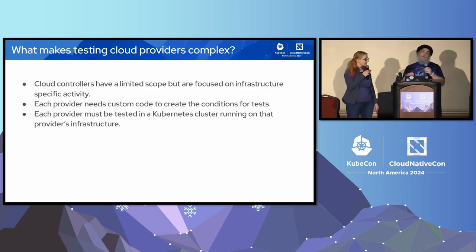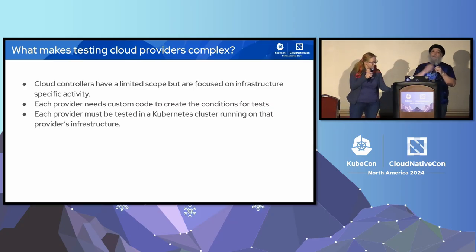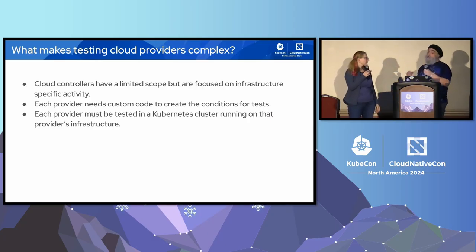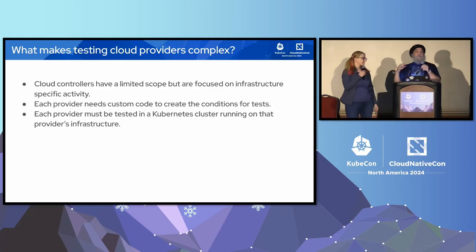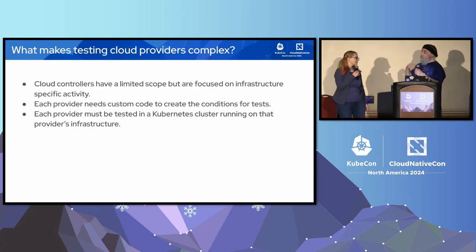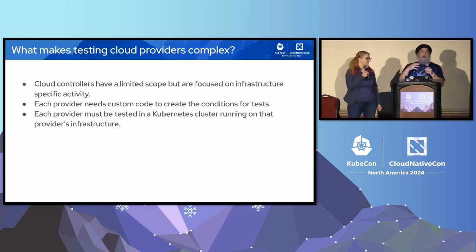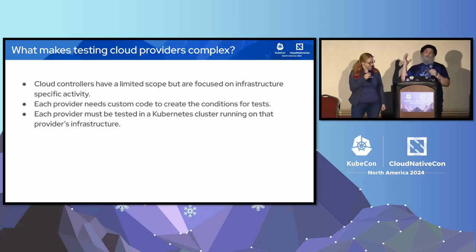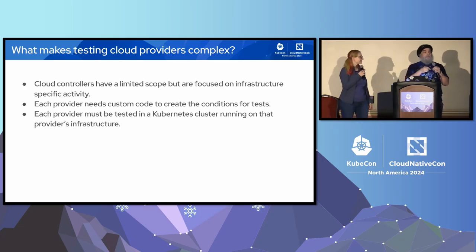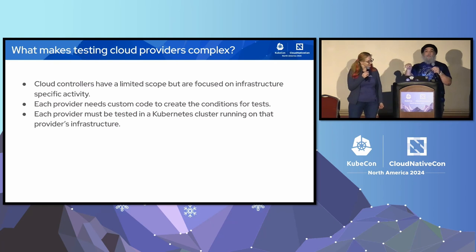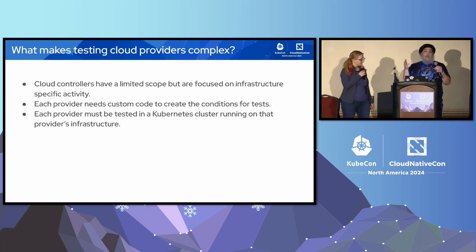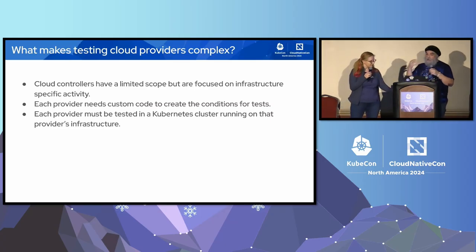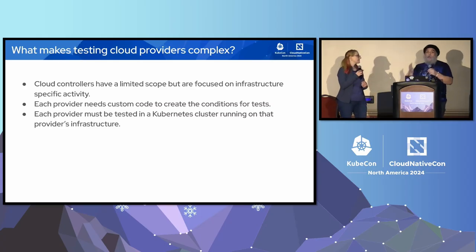With cloud controllers, every cloud is going to operate in a slightly different manner, but the cloud controllers bring some semblance of consistency to the behavior. On the Kubernetes side, we want cloud controllers to accurately report things like lifecycle controls when instances disappear in the cloud. But that requires very specific code to speak to that cloud, to remove an instance, and to detect that it's gone — so each provider needs custom code to create these conditions, and you have to be running tests on that provider.